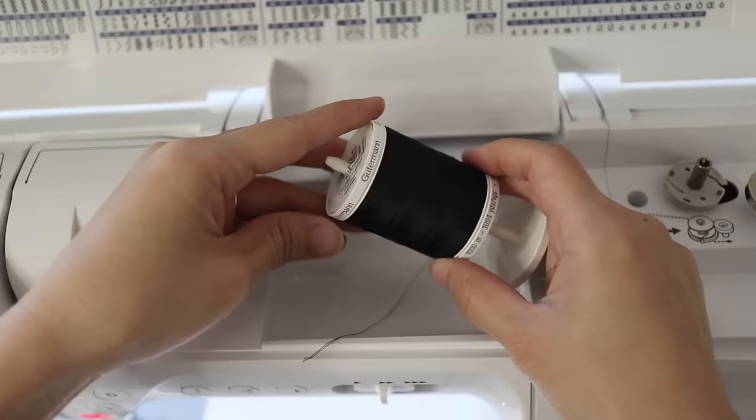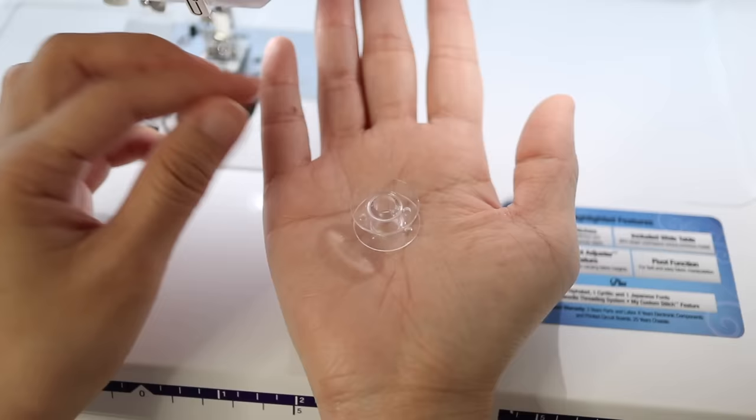First place your spool thread at the top, wherever it's supposed to be on your machine. Mine lays sideways but yours might stand up.